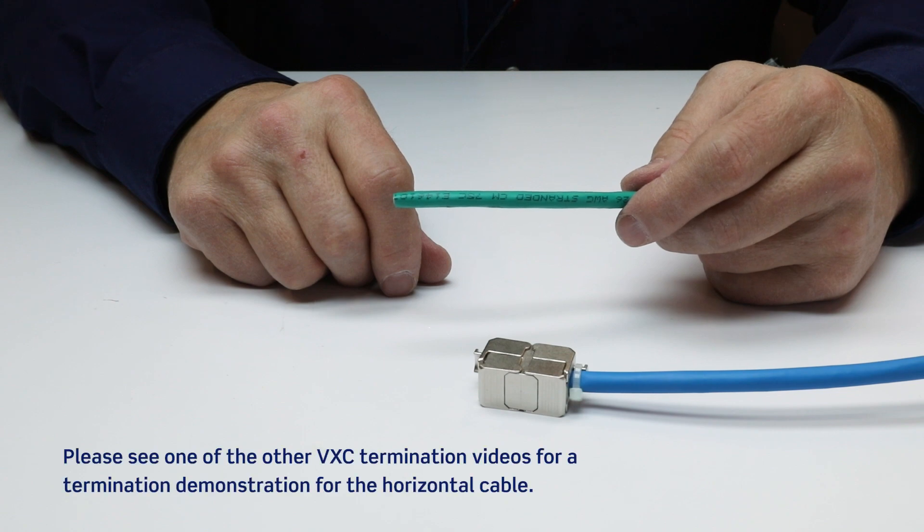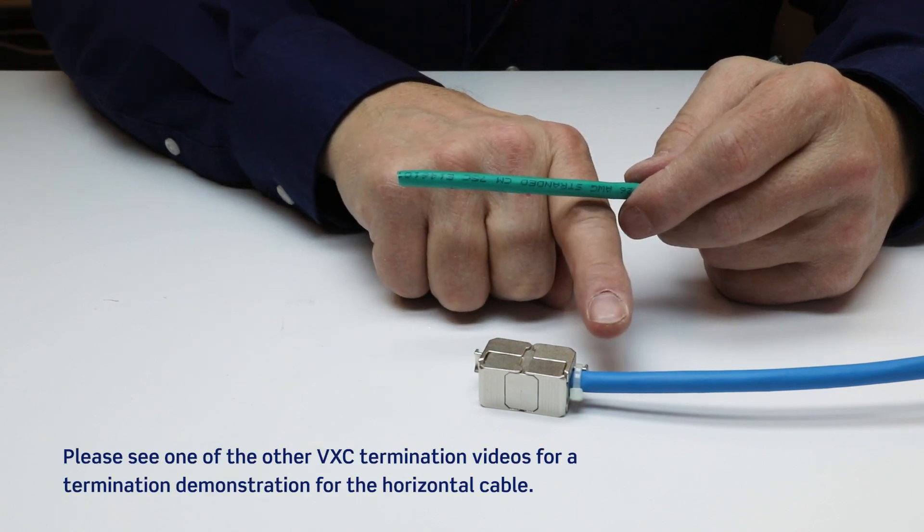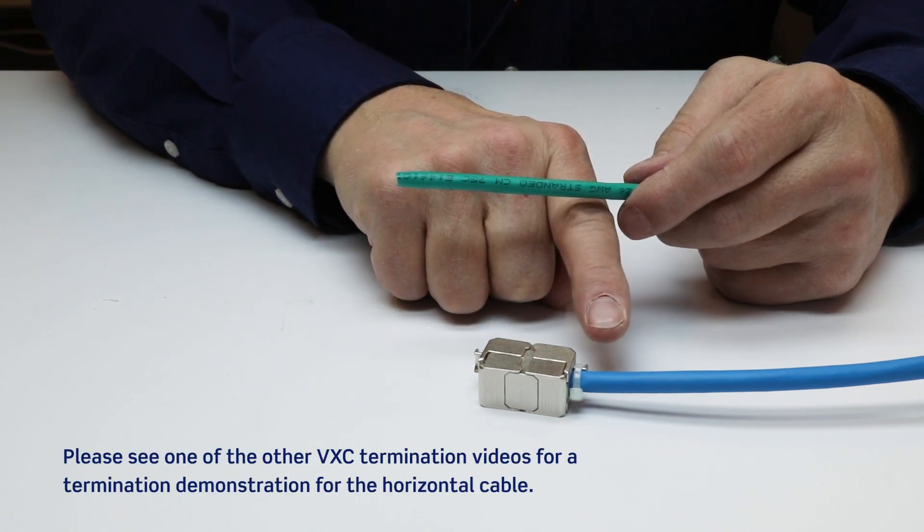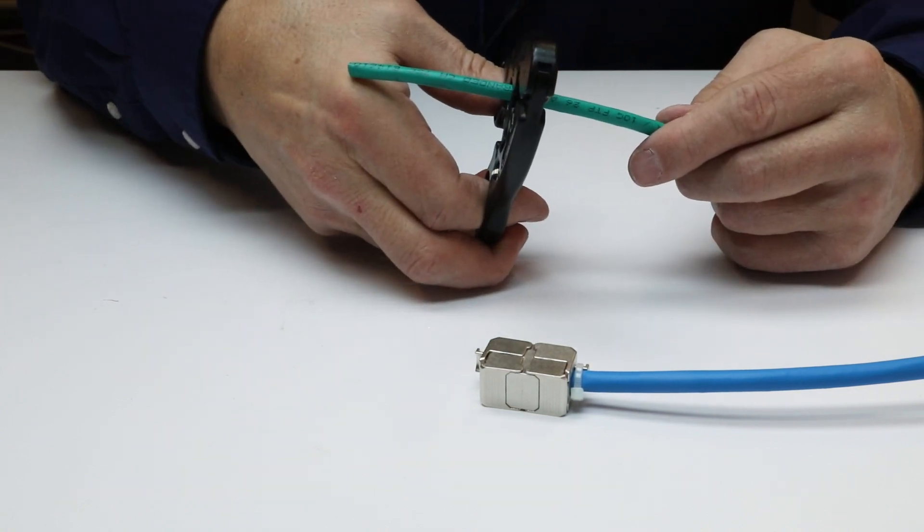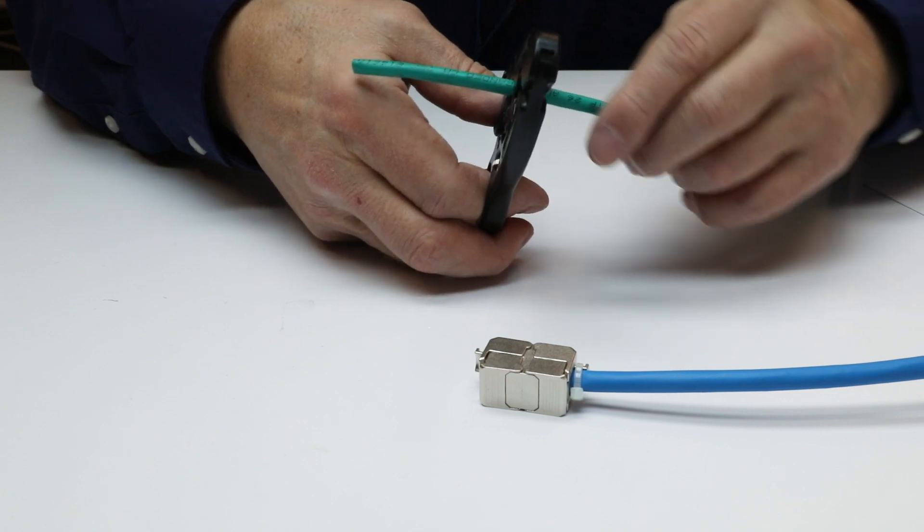To create a Modular Plug Terminated Link, one side of the VXC Coupler is terminated on the end of the horizontal cable. The other side of the VXC Coupler will be terminated with one half of a patch cord. To start,